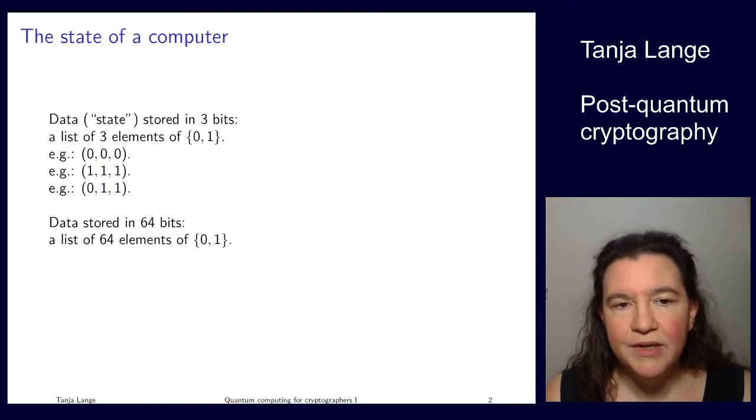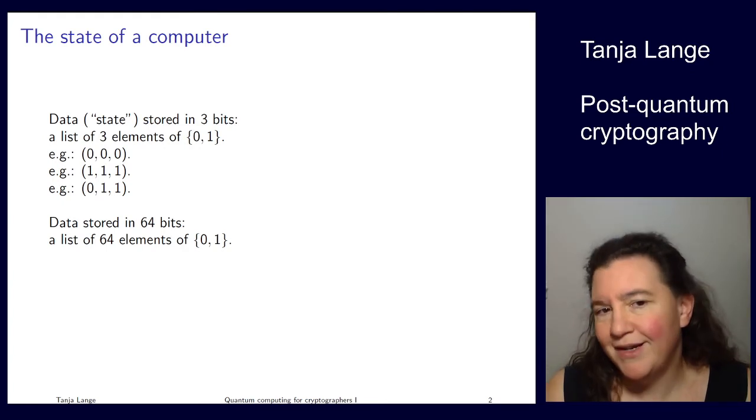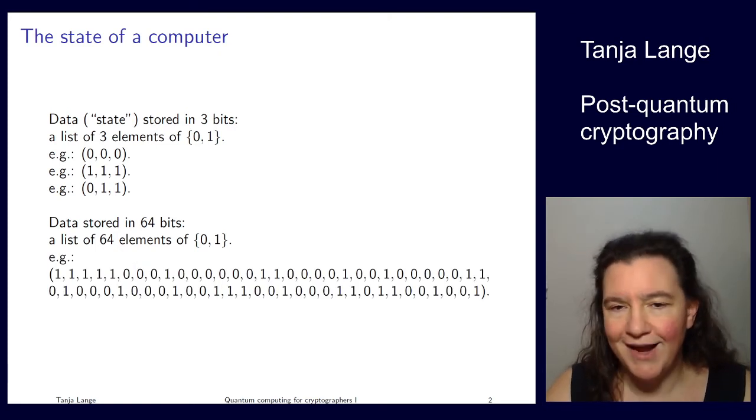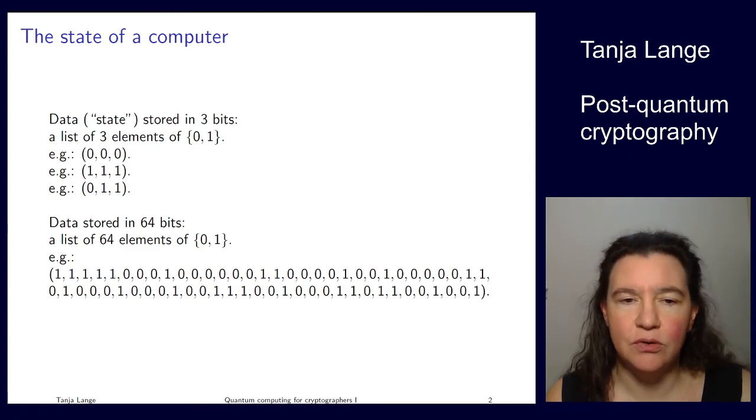Now if you have 64 bits, then it is a similar list of 64 elements, each of which can take a value of 0 or 1. So here is one example where you can count 64 different entries, and for each of those I have chosen a 0 or a 1.